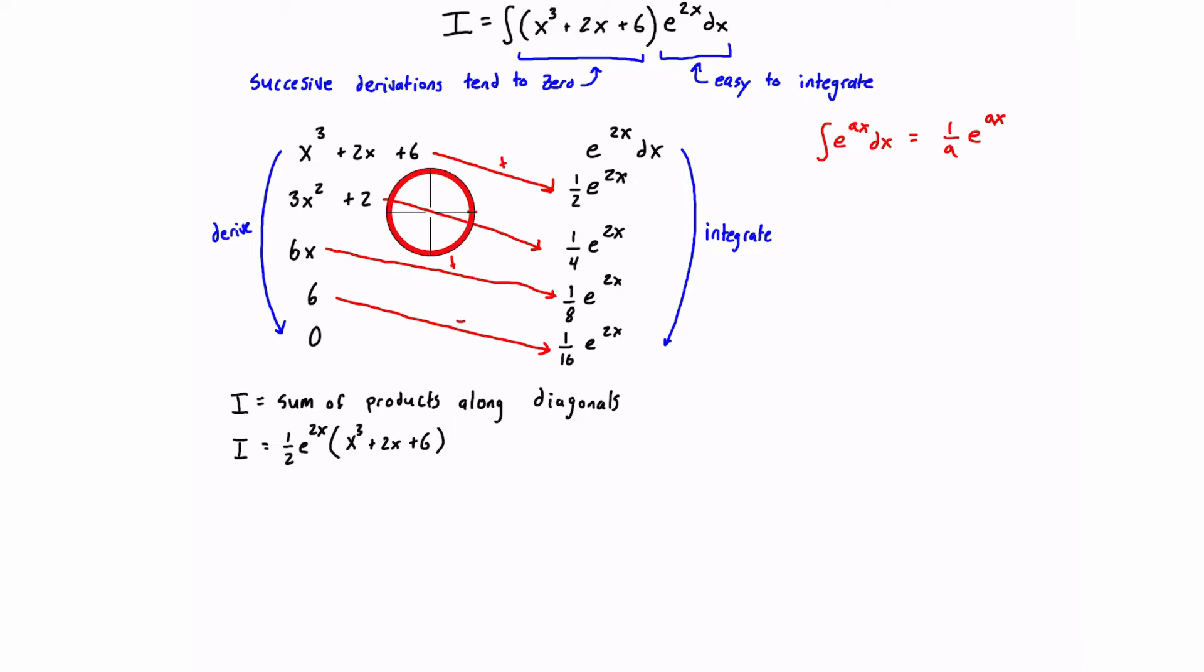The next term here, we're going to give it a negative sign. And we're multiplying two positive terms here. So that negative sign is actually what's going to show up. So we'll have minus 1/4 e^(2x) times (3x² + 2).